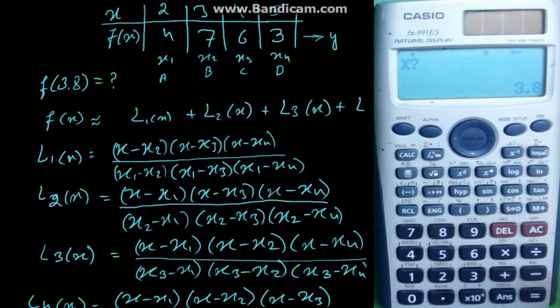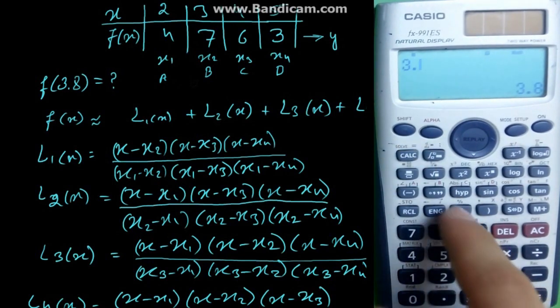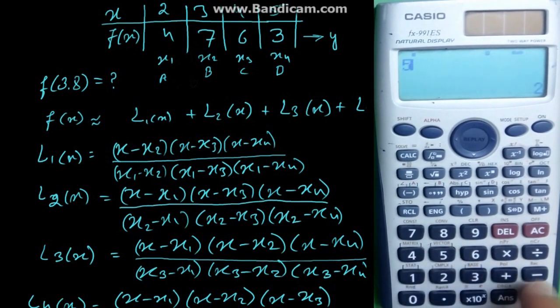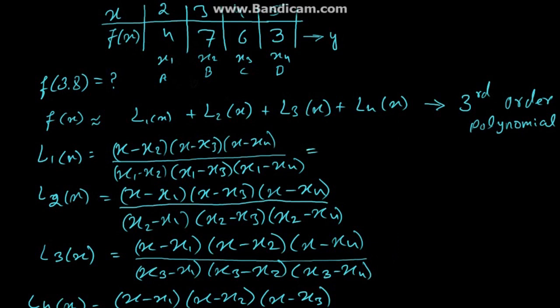Press the calculation key, enter x is 3.8, enter b is 3 and c is 4 and enter 5 for d, enter 2 for a, for y enter 4. We get minus 16 by 125 which is L1 of x.